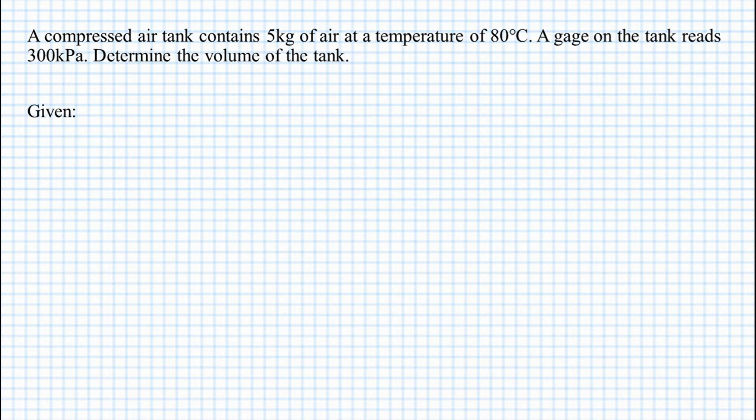We have a given of mass equals to 5 kg, a temperature of 80 degrees Celsius, a gauge pressure of 300 kilopascals, while we have the constant value of atmospheric pressure of 101.325 kilopascals and a gas constant of 286.9 joules per kilogram Kelvin.